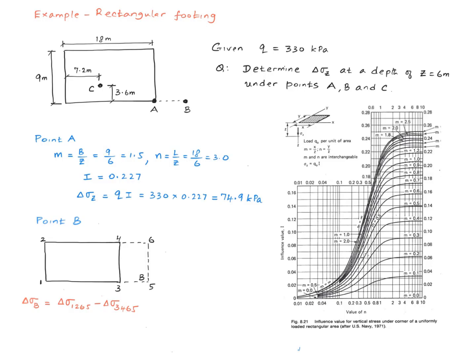We subtract the smaller one from the big one in order to get the change in stress at point B due to the footing loading. So we go ahead and calculate these dimensionless factors, little m and little n, for each of the rectangles.